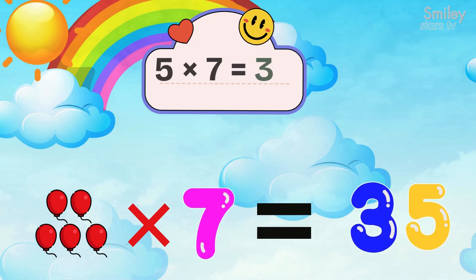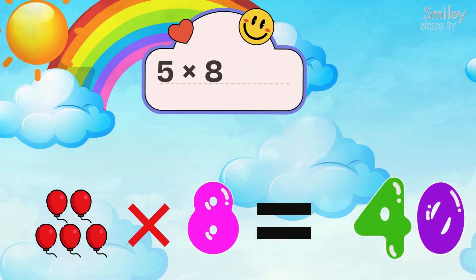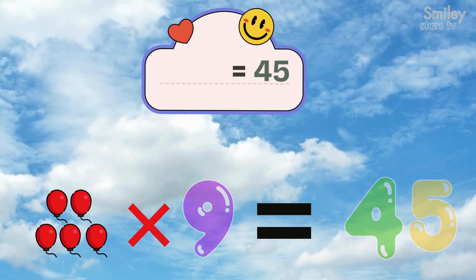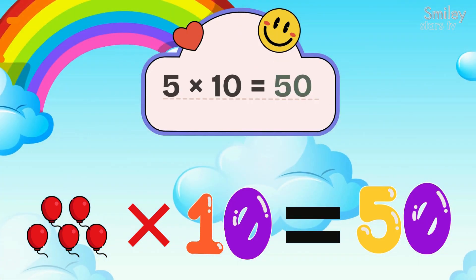Five sevens, thirty-five. Five eights, forty. Five nines are forty-five. Five tens, we know it's fifty. Oh, it's fifty.